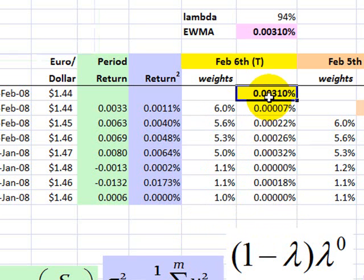So if I sum this whole series, you can see right here, in this case, I get 0.00310%. Well, that is the calculation for the variance under the exponentially weighted moving average approach.